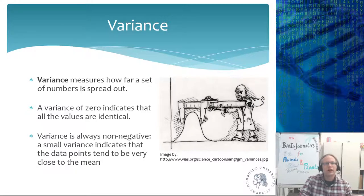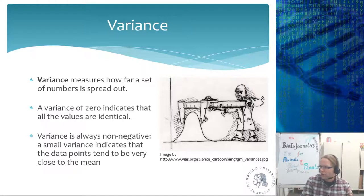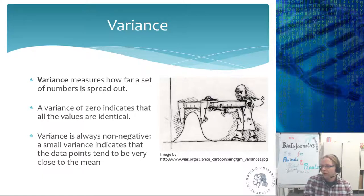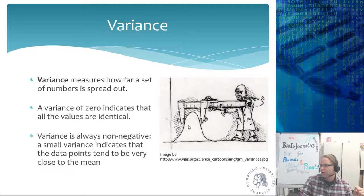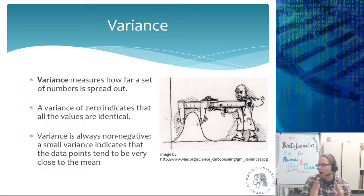Variance is a measurement of how spread out your numbers are. A variance of zero means all measurements are identical. Variance is always non-negative: the bigger the variance, the wider the distribution — the more difference there is between the lowest and highest values. For a normal distribution, the mean is generally in the middle and the variance describes how wide the curve is.